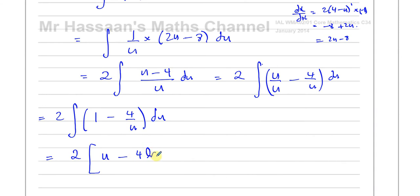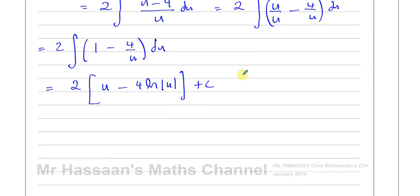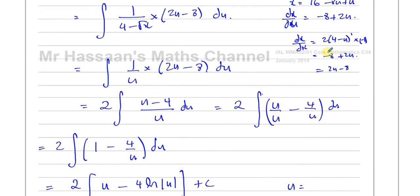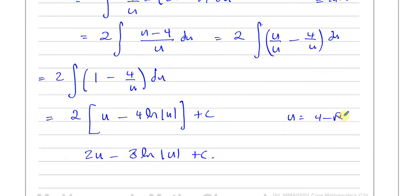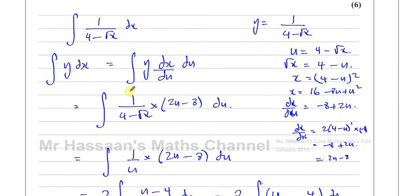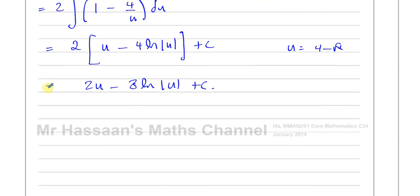Now I can integrate: 2 times the result is u minus 4 times ln of the modulus of u. This is now of the form where I can use ln because the numerator is the differential of what's in the denominator. So 4 times ln|u|, divided by the differential of u which is just 1. The answer is 2u minus 8 ln|u|, plus c.